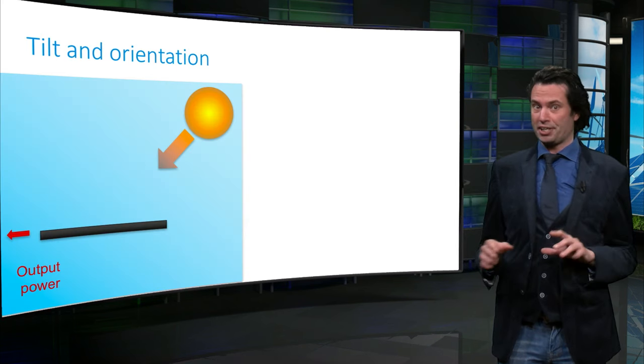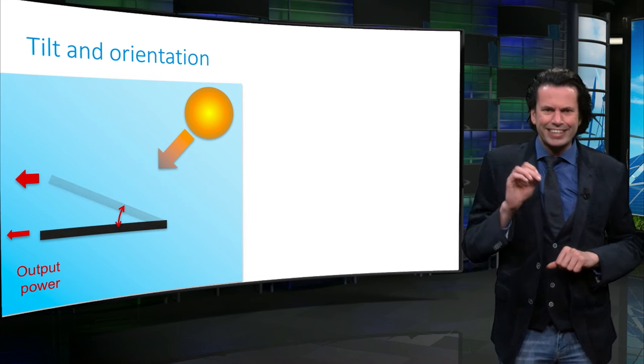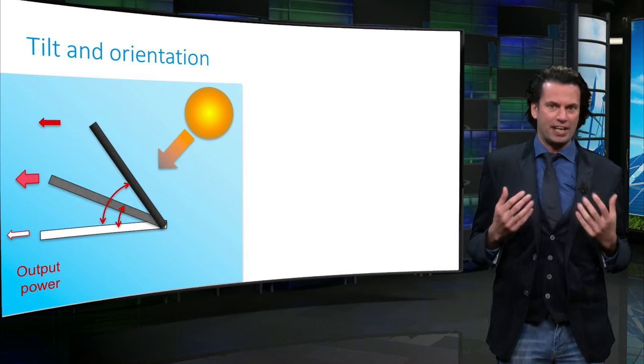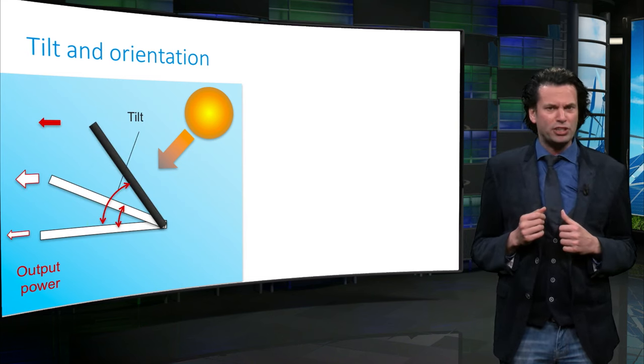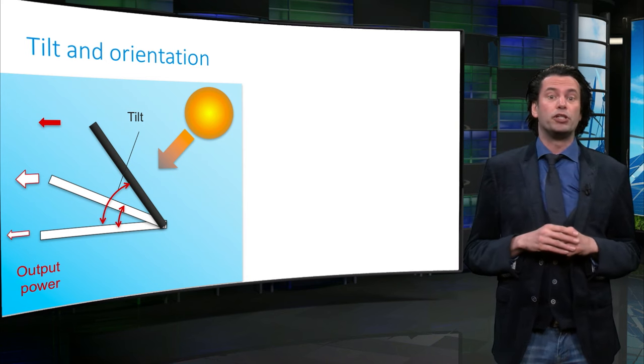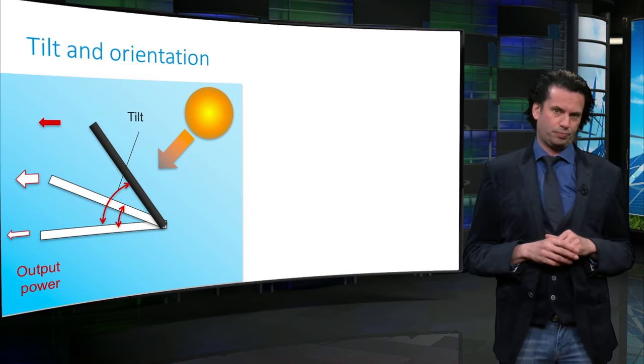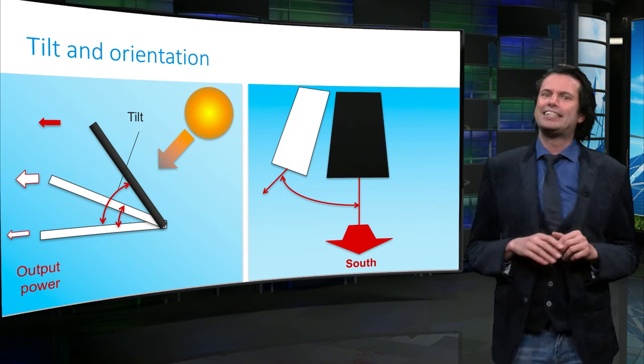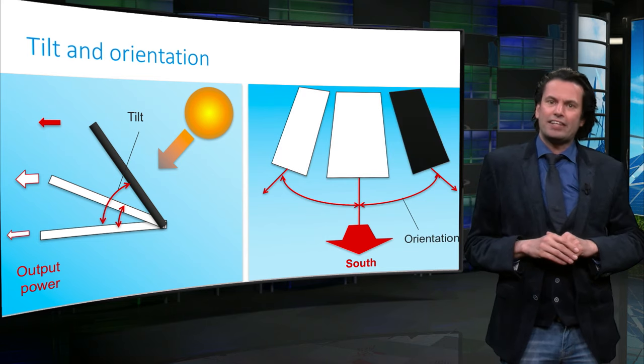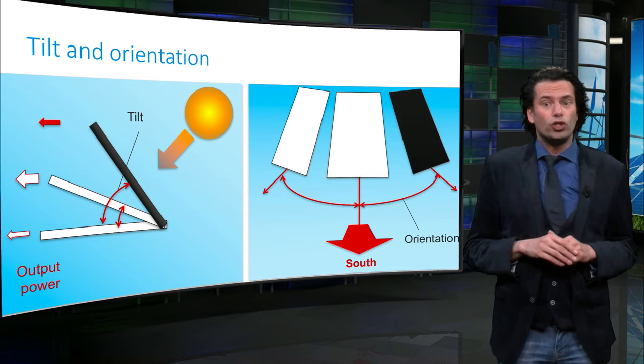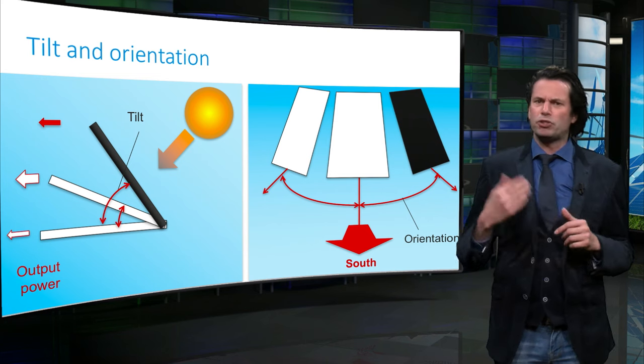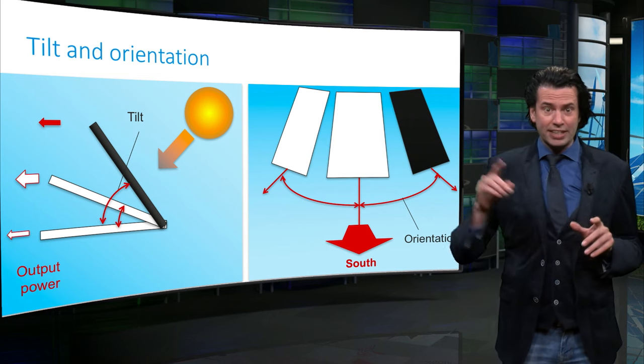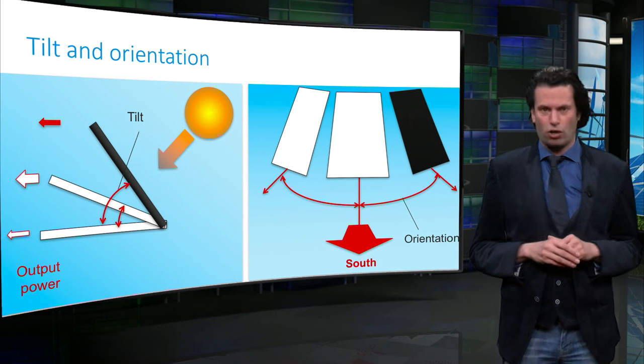What do we mean by orientation and tilt? Tilt is the degree of freedom that defines the elevation or the pitch of the solar module with respect to the horizontal. Orientation is the degree of freedom that defines the azimuth or the jaw of the module with respect to the position, which in this case is the geographic south.